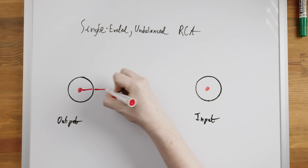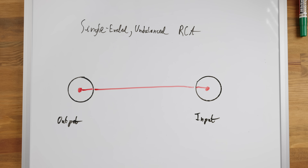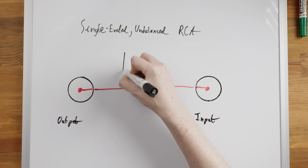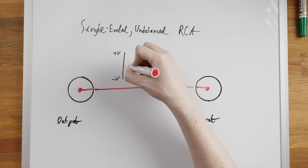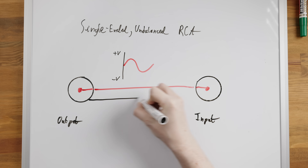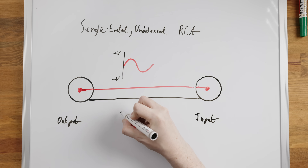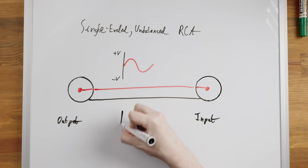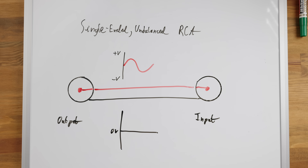Our positive connection carries the electrical audio signal from one device to the next. Playing a sine wave, the voltage on this conductor will oscillate between positive and negative as indicated by the sine wave itself. The ground connection is fixed at zero volts, it does not carry a signal, and the single signal-carrying conductor is what makes this single-ended.